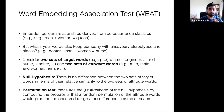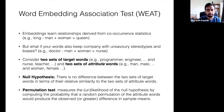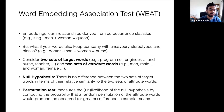We form a null hypothesis which says there is no difference between the two sets of target words in terms of their relative similarity to the two sets of attribute words — that the mean distance of man to programmer and engineer is the same as the mean distance of woman to programmer and engineer. To identify whether our observed value of the test statistic is statistically significant, we use a common statistical tool called the permutation test. Basically, we shuffle or permute the observed data by assigning different outcome values to each observation from among the set of actually observed outcomes.